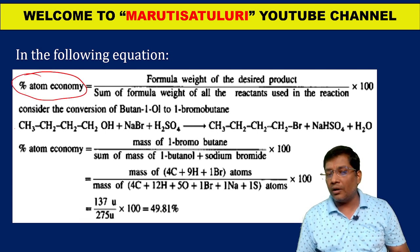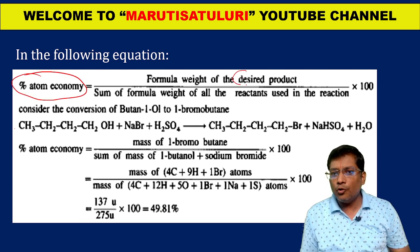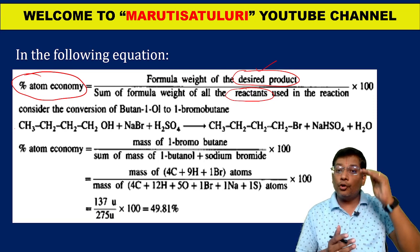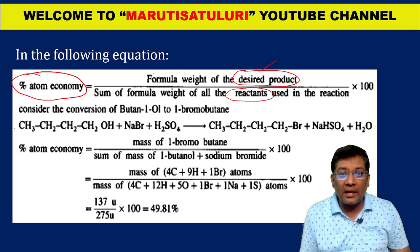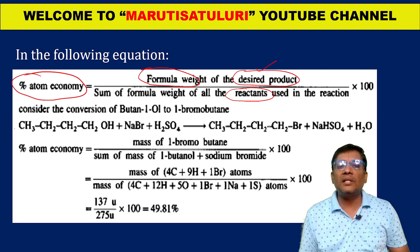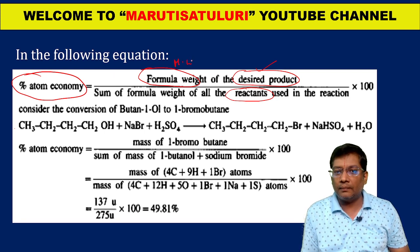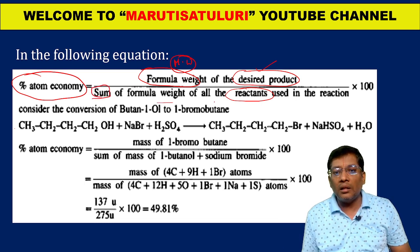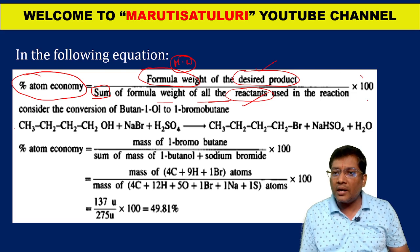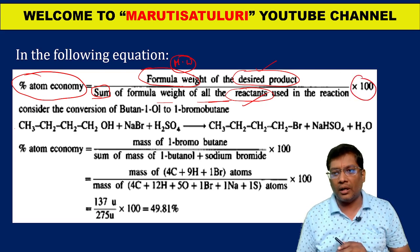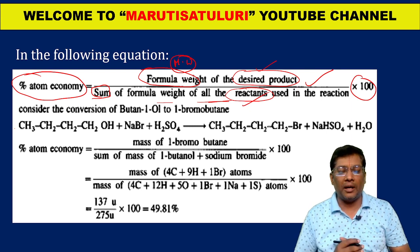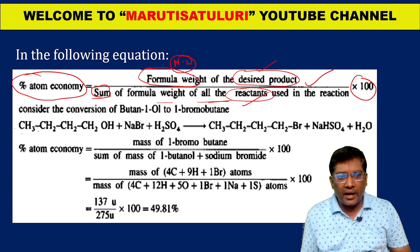To find percentage atom economy: in the numerator, take the molecular weight of the desired product; in the denominator, take the sum of all the molecular weights of the reactants used, then multiply by 100. This is the formula for atom economy.